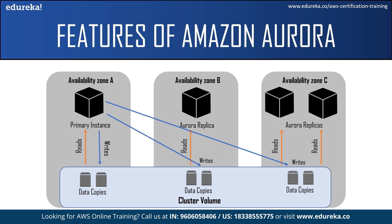The second type is the Aurora replica, which connects to the same storage volume as the primary DB instance and supports only read operations. Each Aurora DB cluster can have up to 15 Aurora replicas in addition to the primary DB instance. Aurora replicas are located in separate availability zones, providing high availability. When a primary DB instance becomes unavailable, Aurora automatically fails over to an Aurora replica, and you can specify the failover priority. In a multi-master cluster, all DB instances have read-write capability, so the distinction between primary instance and Aurora replica does not apply.